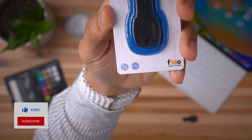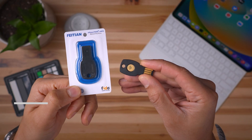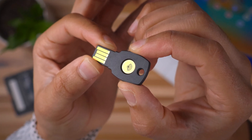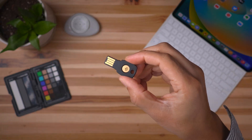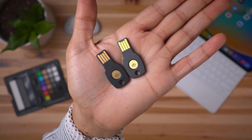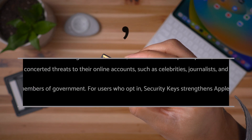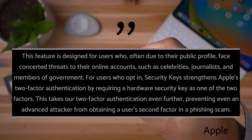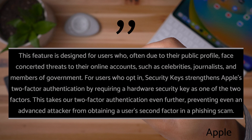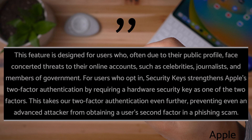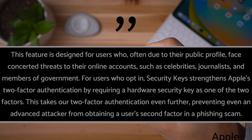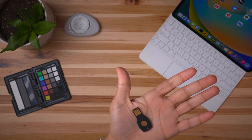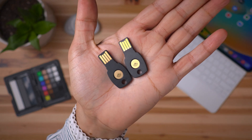In iOS 16.3, Apple introduced support for hardware security keys that are FIDO2 certified. I bought this one off Amazon for $25 — I actually purchased two of them. They support both USB-A connectivity and NFC connectivity, so you can wirelessly authenticate with an iPhone. This feature is not targeted to everyday users; as Apple says, it's designed for users who face concerted threats to their online accounts, such as celebrities, journalists, or members of the government. The security keys strengthen Apple's two-factor authentication by requiring a hardware key as one of those two factors, replacing the six-digit verification code and preventing even advanced phishing attacks.